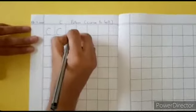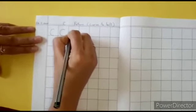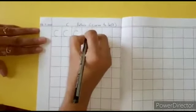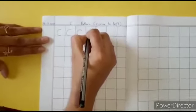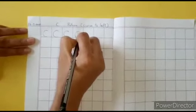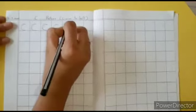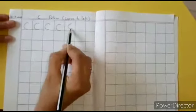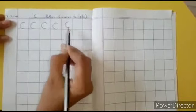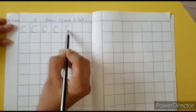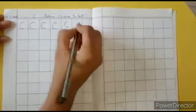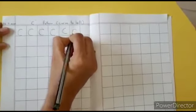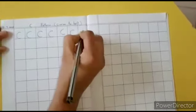Again, keep your pencil at the center, write a curve to the left, come down, touch the bottom line. Children, we cannot write like this because it is not touching the bottom line. There should not be any gap between the pattern and the bottom line. Once again, keep your pencil at the center, write a curve to the left, come down and touch the bottom line.